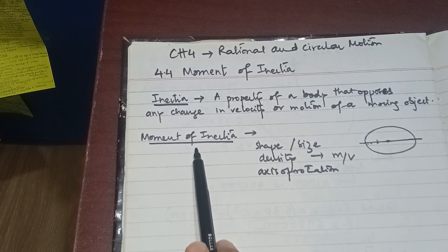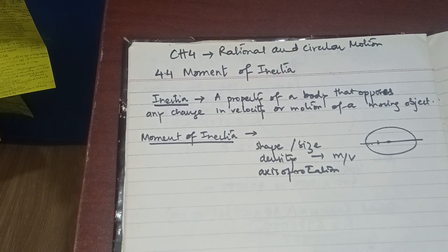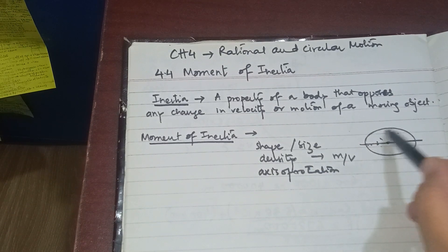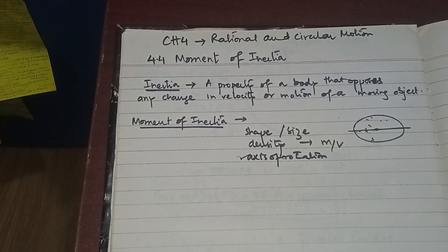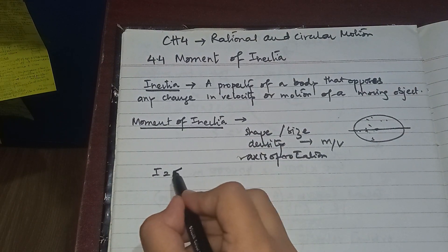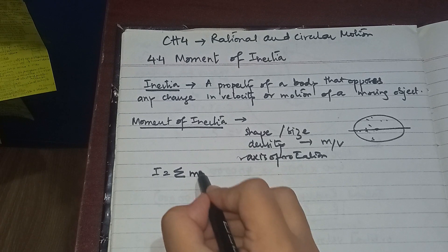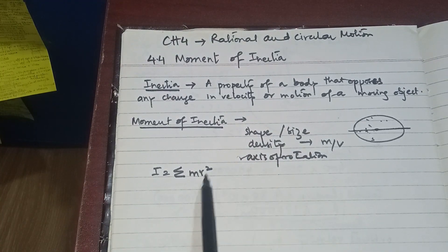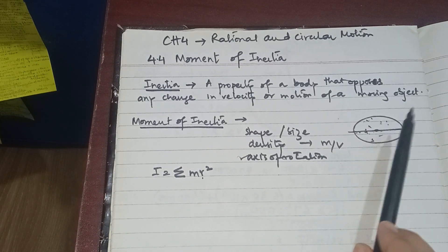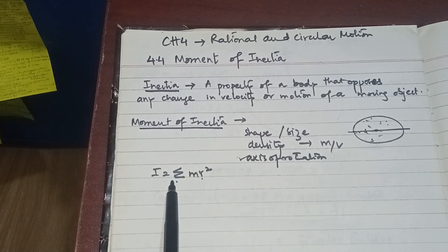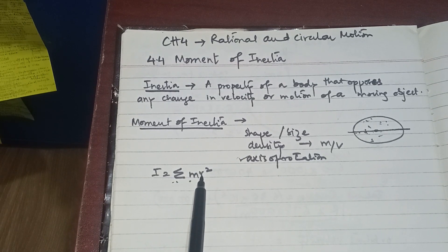Moment of inertia is basically the mass of rotating bodies. Every particle of mass contributes towards inertia. The formula is the summation of all the masses multiplied by the perpendicular distance from the axis of rotation squared — that is I = Σmr².